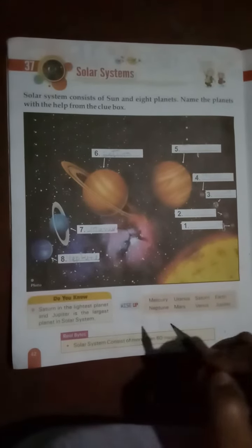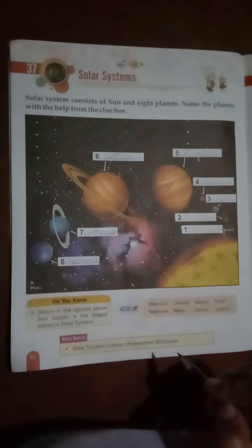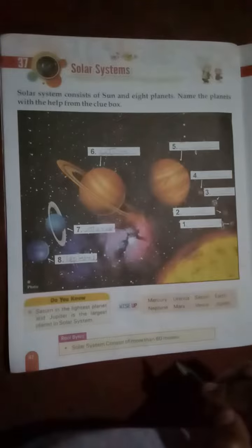Saturn is the lightest planet and Jupiter is the largest planet in solar system. Dear children, please write these eight planets' names and learn it, okay? And today's homework for you: to write eight solar system's names two times. This much is enough for today. Thank you, have a good day.